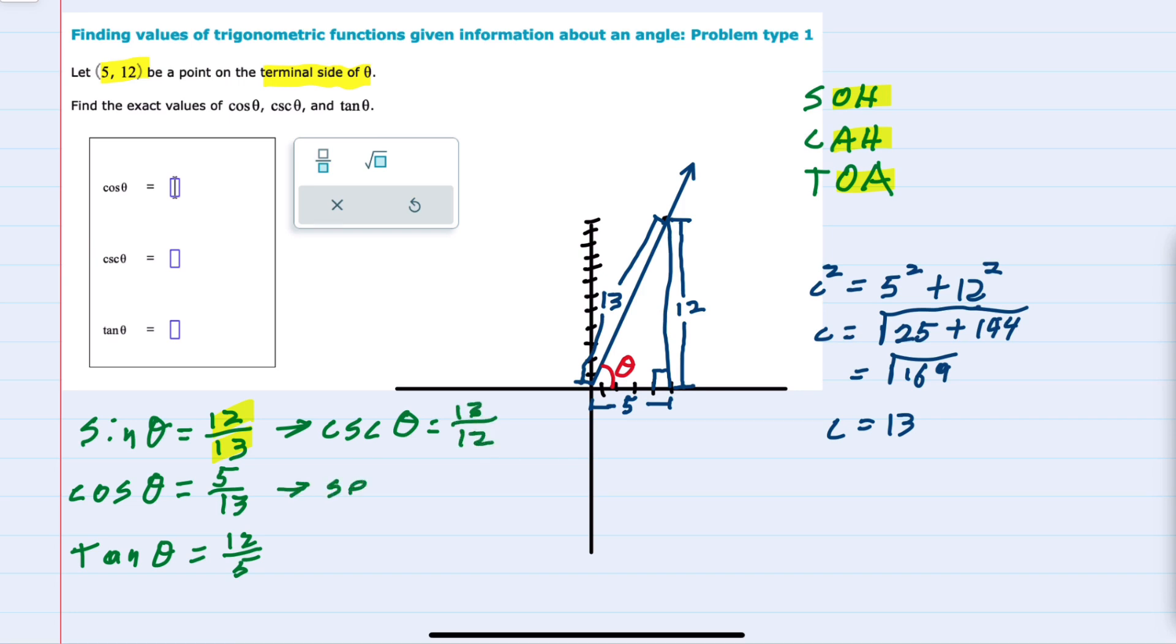Likewise, the secant of theta would be the reciprocal of the cosine. So instead of 5 over 13, it's 13 over 5.